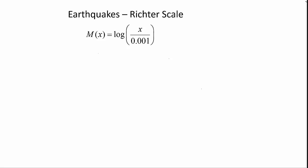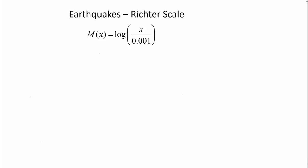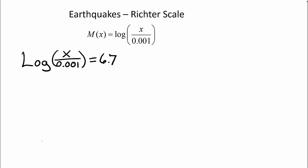Finally, let's show that an earthquake which registers 6.7 on the Richter scale has a seismograph reading 10 times larger than one which measures 5.7. Let's first compute the seismograph reading for a 6.7 magnitude earthquake. So we have log of x over 0.001 equal to 6.7. Converting that to exponential form, remember that log is base 10, so x over 0.001 equals 10 to the 6.7. Using our calculator, 10 to the 6.7 approximately equals 5,011,872.3.